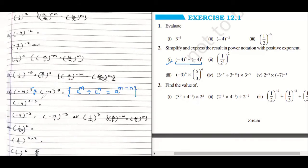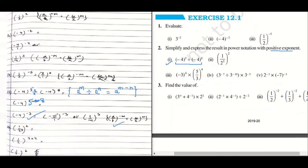Bases are same, and in case of division the powers get subtracted. So minus four to the power of five minus eight — your answer was correct. This gives minus four to the power minus three. Now the power is negative, but the question says the exponent should be positive. So we will use the law: write it as a fraction. We will write minus one to the power four, whole to the power three, as the answer.